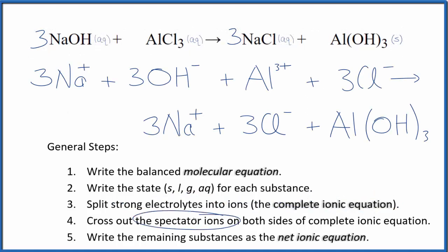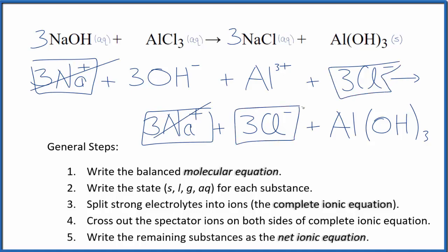Now we can cross out the spectator ions. They appear on both sides. We have reactants and products. So in the reactants, we have these three sodium ions, and again in the products, those are spectator ions. We cross those out. We have three chloride ions here,